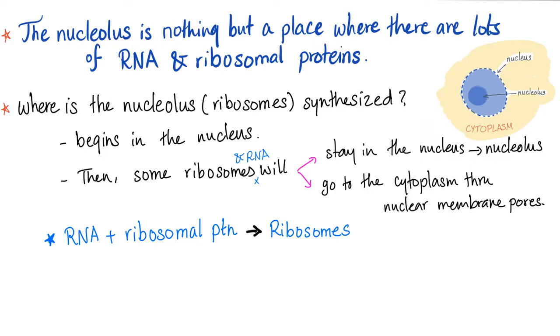The nucleolus is nothing but a place where there are lots of RNA and ribosomal proteins. That's why we don't need a nucleolar membrane. There is no such thing. Where are the ribosomes synthesized?